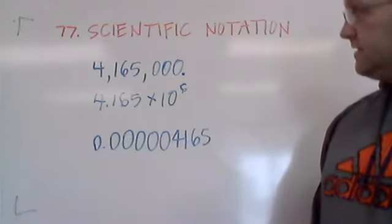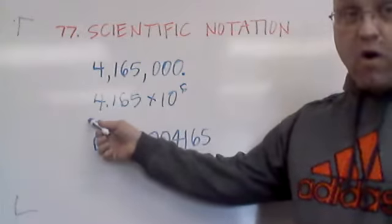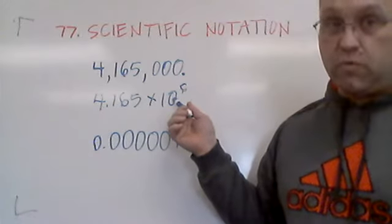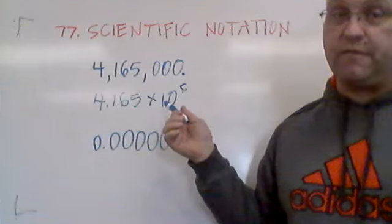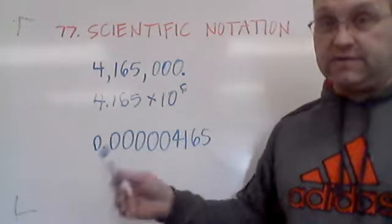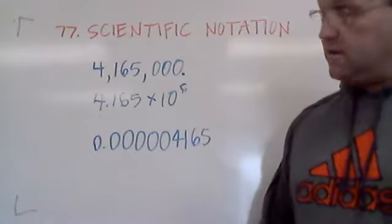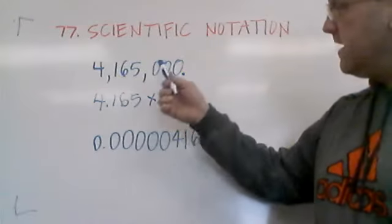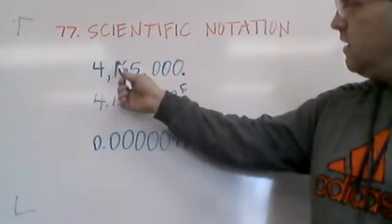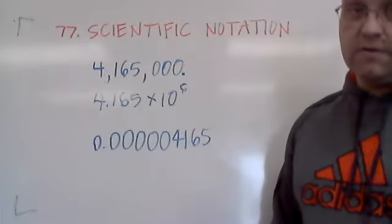10 to the 6th. So it's 4.165 times 10 to the 6th. 10 to the 6th, if you recognize, is an expression for a million. That's a thousand of thousands. A thousand thousands is a million. So we have 4.165 times a million is 4,165,000.